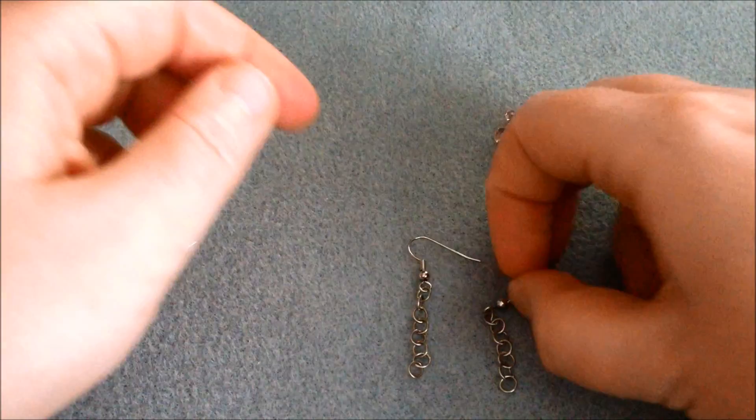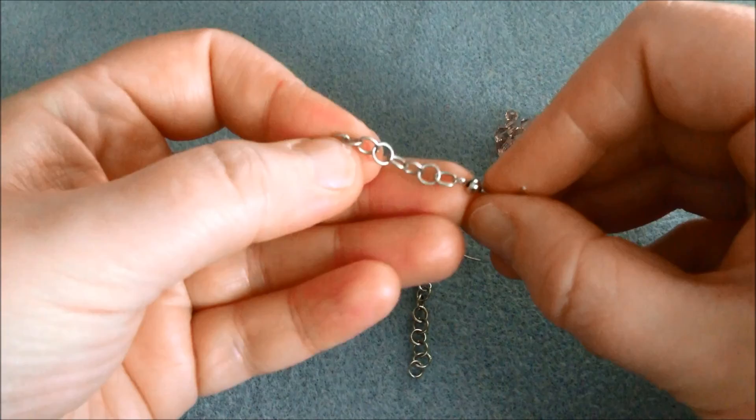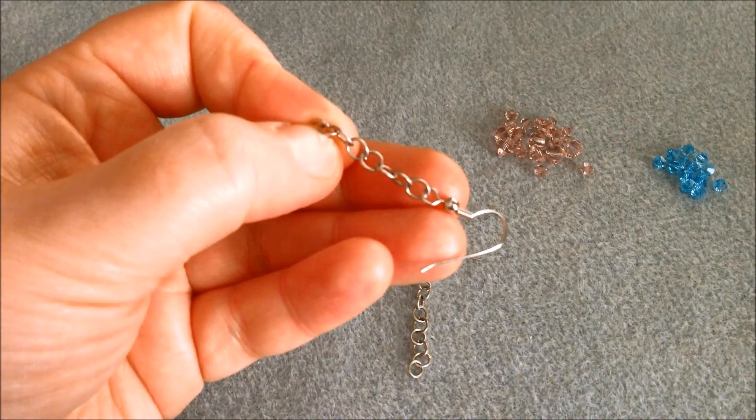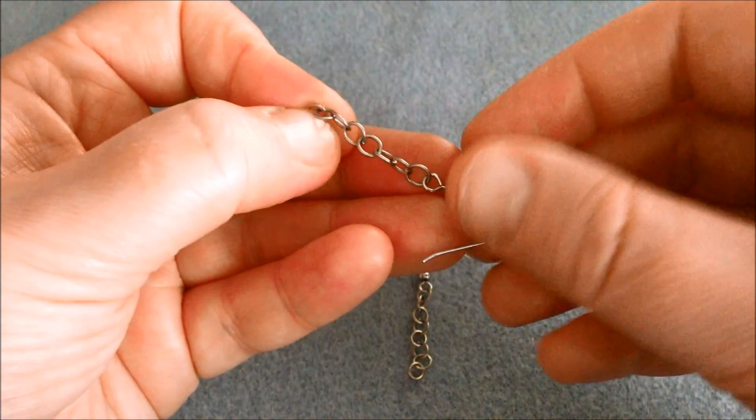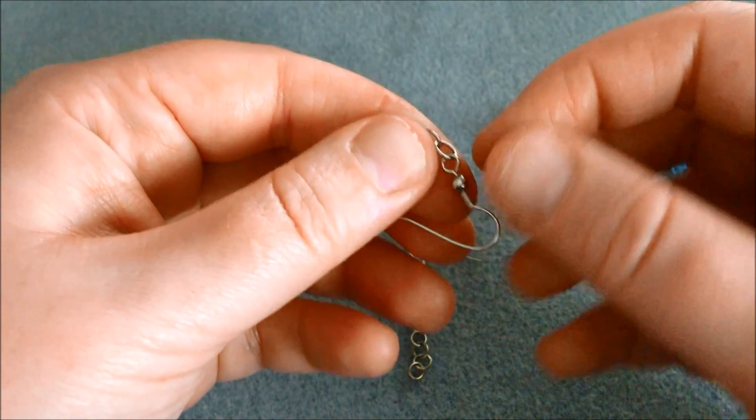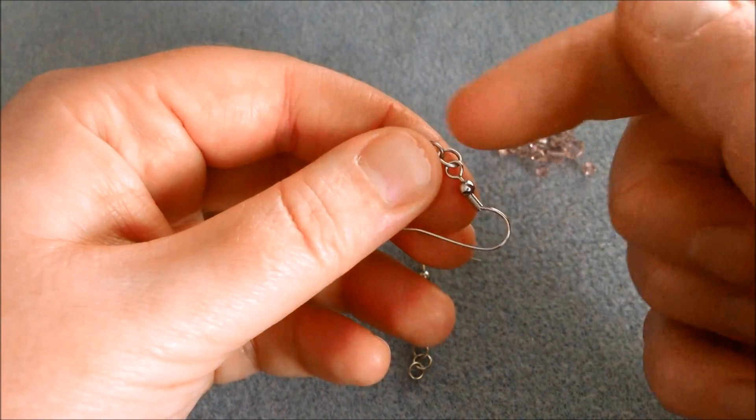I started my project by cutting two pieces of chain of equal length. These both have eight loops and then I attached them onto my ear wires and the attachment was really easy. I just opened up that loop by pulling it sideways and then I slipped on this chain and closed them.